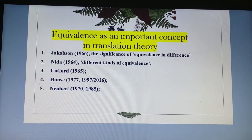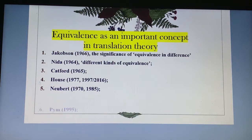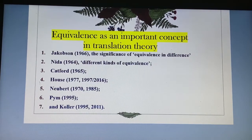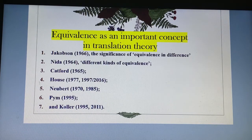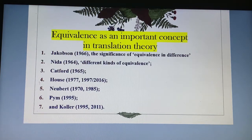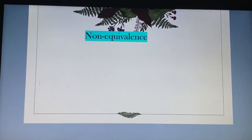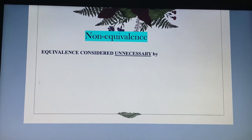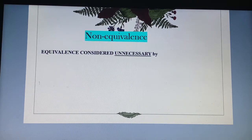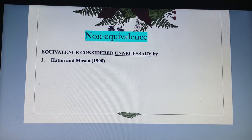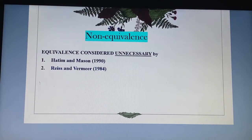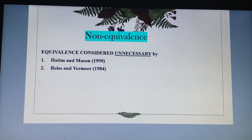Also in the pro-equivalence camp are Newbert in 1970 and 1985, Pym in 1995, and Kohler in 1995 and 2011. Moving to the non-equivalence scholars, we have Hatim and Mason in 1990, and Reiss and Vermeer in 1984, who say that equivalence is not really necessary — it's no longer needed and not that important.